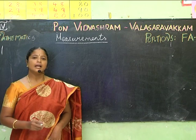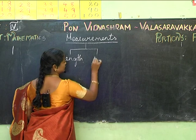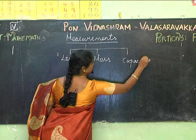In measurements we have three basic components. They are: Length, Mass, and Capacity.